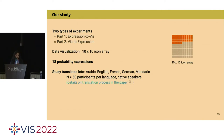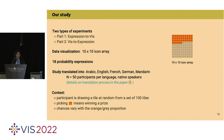Our study consists of two types of experiments. Participants see both types in random order — half start with expression-to-viz and the other half with viz-to-expression. We use a 10-by-10 icon array with orange and gray icons, and we work with 18 probability expressions. The study is translated from English into Arabic, French, German, and Mandarin, with 50 participants recruited for each language. All participants are required to be native speakers of their experiment language.